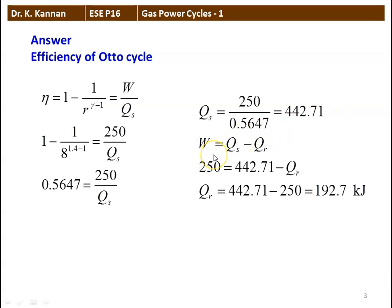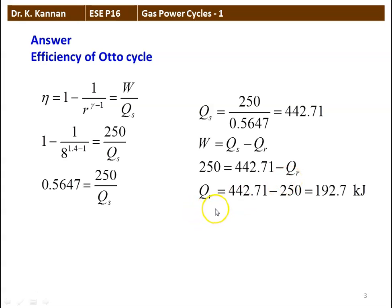From the first law of thermodynamics, net work done equals net heat transfer: heat supplied minus heat rejected. Net work done equals 250, heat supplied we calculated as 442.71 minus QR. Rearranging, the heat rejected equals 442.71 minus 250 equals 192.7 kilojoules. So the answer is 192.7 kilojoules.